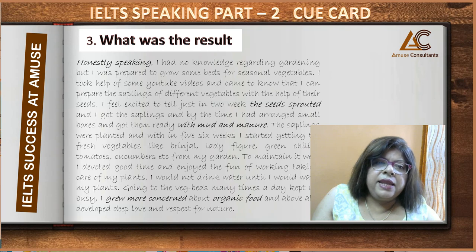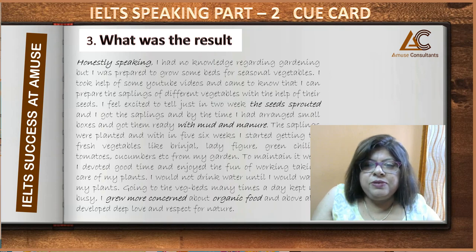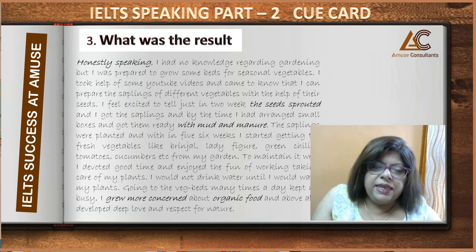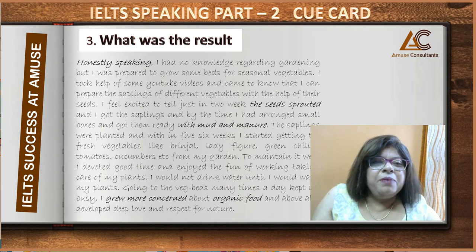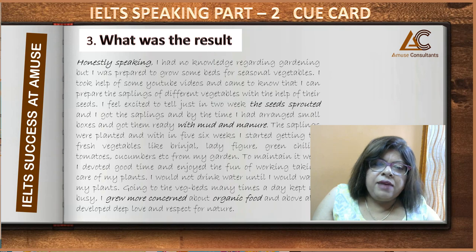The saplings were planted, and within five to six weeks I started getting fresh vegetables — brinjal, ladyfinger, green chillies, tomatoes, cucumber, and more from my garden. To maintain it, I devoted good time and enjoyed taking care of my plants. I would not drink water until I had watered my plants. Going to check the vegetables many times a day kept me busy. I grew more concerned about organic food and, above all, developed love and respect for nature.